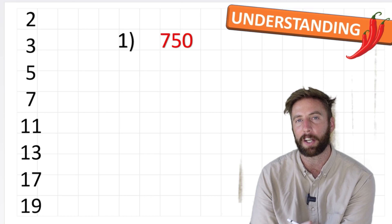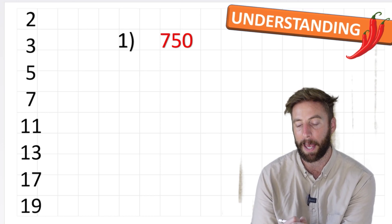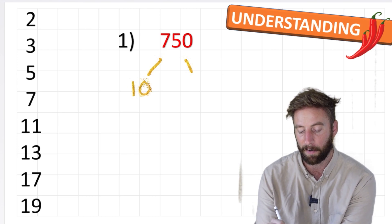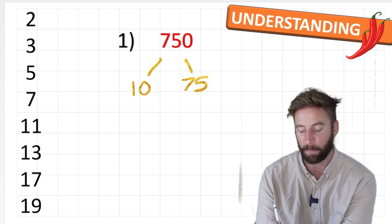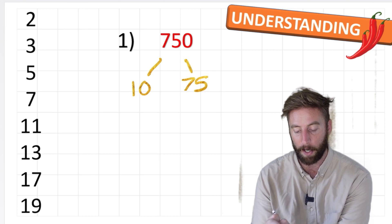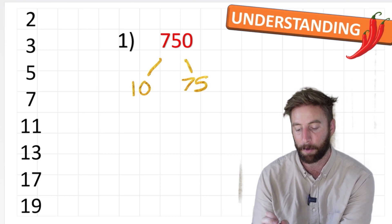Well, this might look actually harder than it actually is because what we're trying to do is just find a factor pair. And one sensible starting position might be here to do 10 and 75 because 10 times 75 equals 750. But have I found any prime numbers yet? No, I don't think I have. 10 is not a prime number and 75 is not a prime number. So I need to keep going.